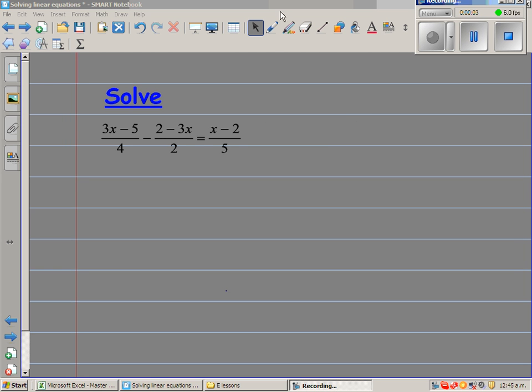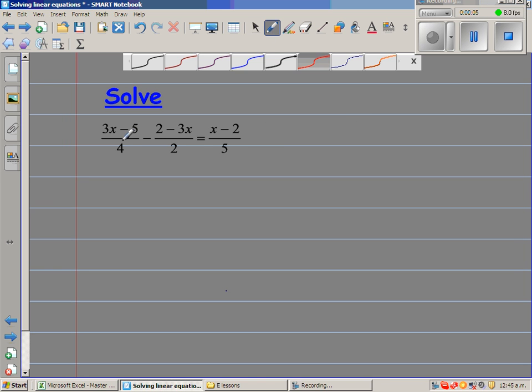Solve this equation, which is 3x minus 5 over 4 minus 2 minus 3x over 2 is equal to x minus 2 over 5. So when you have an equation like this, I would like to get rid of these denominators.